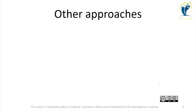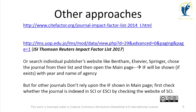Other approaches include visiting the websites of agencies like Cite Factor and others to find the list of impact factors, or searching individual publishers' websites such as Elsevier, Springer, and other reputed publishers. Choose the journal from their list and open its main page — the impact factor will be shown with year and name of agency if it exists. For other journals, please don't rely solely on the impact factor shown on the main page; first check whether the journal is indexed in SCI or ESCI by checking the respective website.